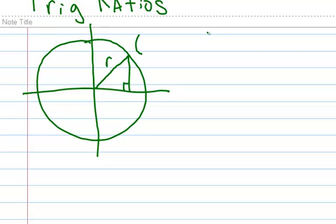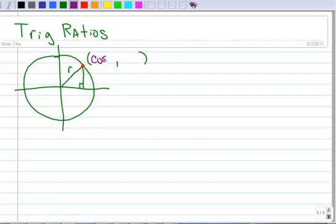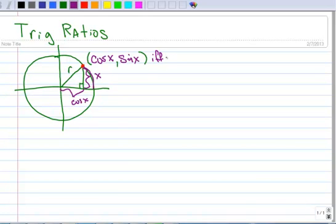Before I go any further, I'm just going to refresh your memory that the coordinates of this point here — recall, it's the cosine of x, if x is that arc length, and the sine of x. So that means that this distance here is the cosine, and then this distance here, that's the y value, that is the sine. And of course, all of this is just valid if and only if r equals 1.